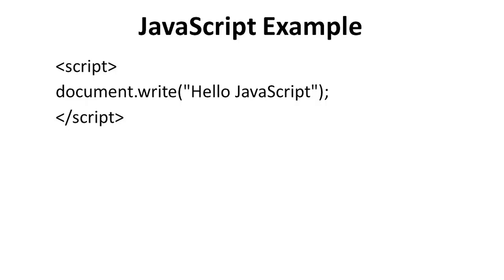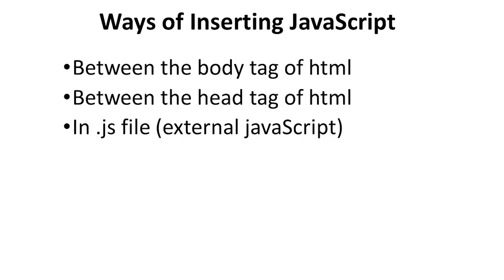Let us consider one example of JavaScript. First, a script tag is used. Then we write document.write to print a customized message — in this case, 'Hello JavaScript' in double quotes, followed by a semicolon, and then the script tag is closed. There are certain ways of inserting JavaScript: it can be inserted between the body tag of HTML, between the head tag of HTML, or in an external .js file.